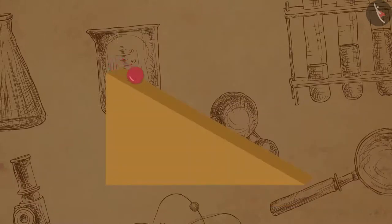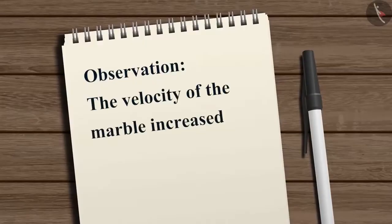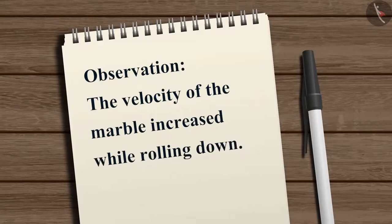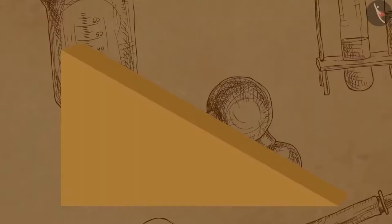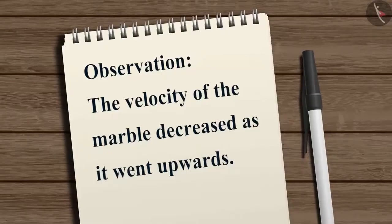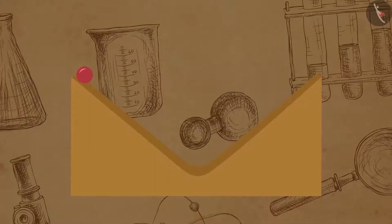Let us take a look at an experiment performed by Galileo. He took a marble and released it from the top of an inclined plane, observing that the velocity of the marble increased while rolling down. He then tried to make it climb up the inclined plane and observed that the velocity decreased as it went upwards. Galileo further argued that if two inclined planes of opposite slopes were kept beside each other, a marble released from the top would roll down only to climb up to the same height on the opposite slope.